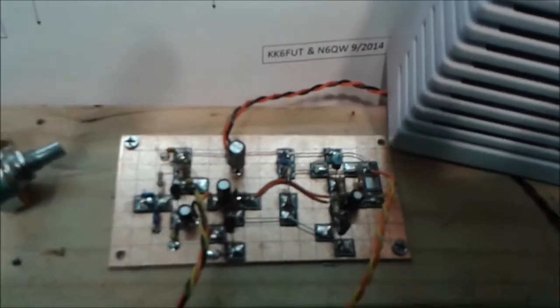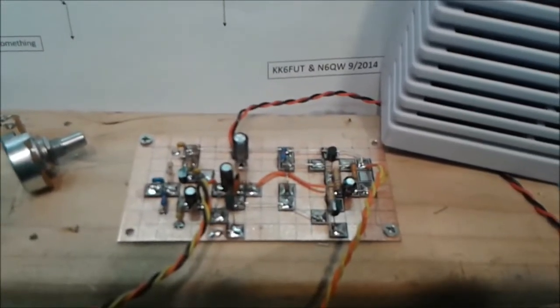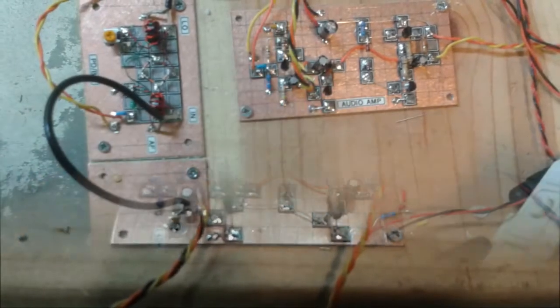So we're ready to connect this up to the rest of the receiver. And then we'll run some tests. Again, this is Pete, N6QW. And this is the Let's Build Something direct conversion receiver audio amplifier stage.